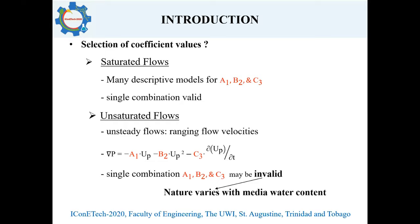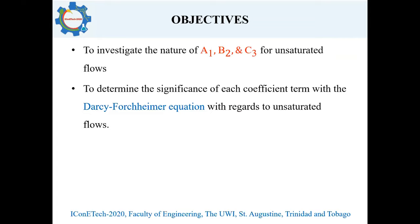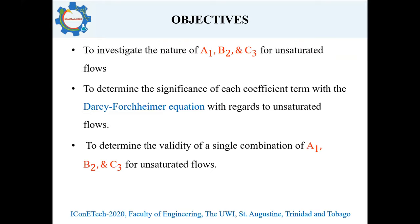The objectives of the research are: to investigate in detail the Forchheimer coefficients for unsaturated flow cases; to determine the significance of each coefficient within the Darcy-Forchheimer equation when applied to unsaturated flow problems; and to determine the validity of utilizing a single combination of these coefficients for unsaturated flow problems. This final objective is motivated by the fact that it is common practice to assume only a single combination of A1, B2, and C3 over the entirety of an unsaturated flow problem.